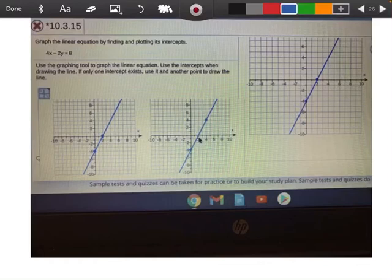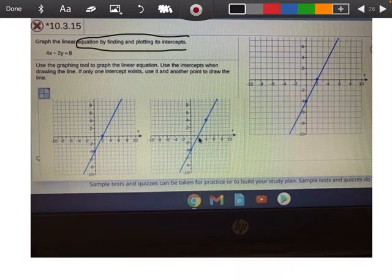All right, so let's take a look at this problem here. It says graph the linear equation by finding and plotting intercepts. So the first thing here is, any time it tells me to graph by finding and plotting intercepts, and it has to say this part specifically.